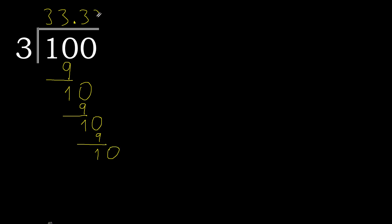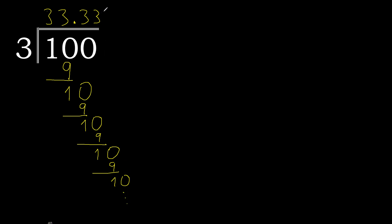Again, 10 — 3 multiplied by 3 is 9 — subtract, complete. This repeats, therefore 3 repeats. Finish.